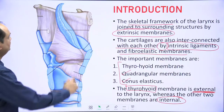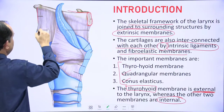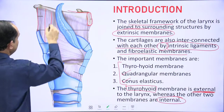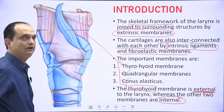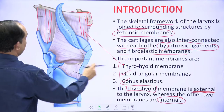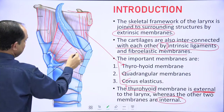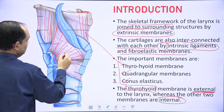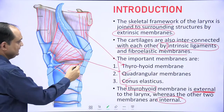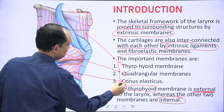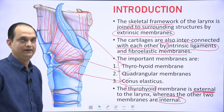In this diagram you can see the hyoid bone. There is a membrane connecting the thyroid cartilage to the hyoid bone known as the thyrohyoid membrane. Apart from that, there are two membranes inside the laryngeal cavity: the upper one is the quadrangular membrane, and the lower one inside the laryngeal cavity is the conus elasticus, also known as the cricovocal membrane.